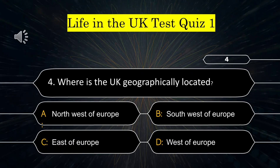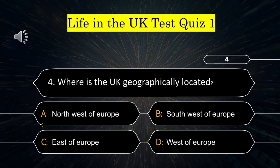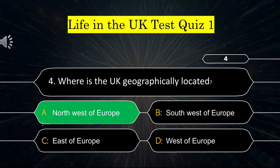Question number 4: Where is the UK geographically located? Your options are: A) North-West of Europe, B) South West of Europe, C) East of Europe, or D) West of Europe. The correct answer is North West of Europe.